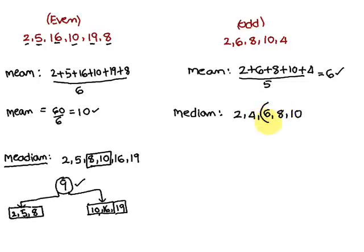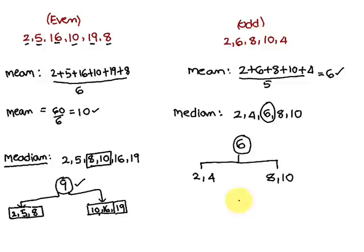With an odd count of five numbers, the third number is the median. So 6 is the median. To the left of 6 are the numbers 2 and 4, and to the right are 8 and 10 — two numbers on each side. Therefore 6 is the median of this set of numbers.